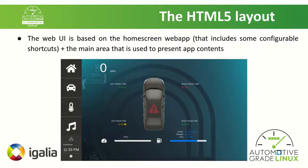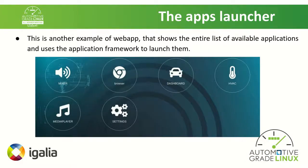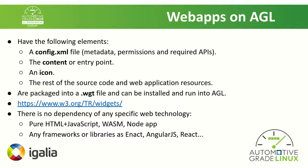How does the HTML5 layout look? Basically, you can see an entire UI that is the home screen web application showing a few application shortcuts in the main area to the left. The application window center shows what the applications contain, or the application launcher shown by default, which is another example of a web app that shows the entire list of applications in the system and uses the app framework to launch them.